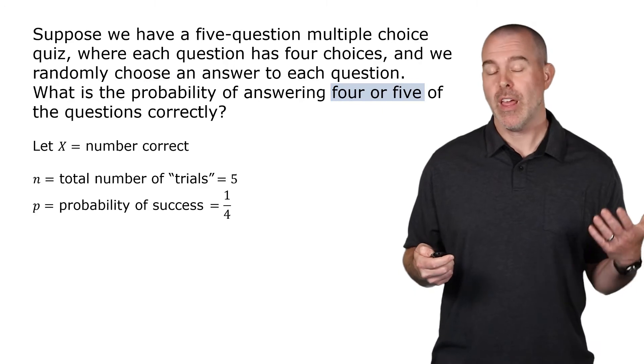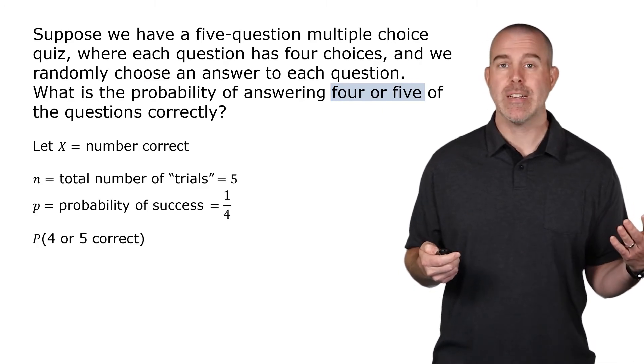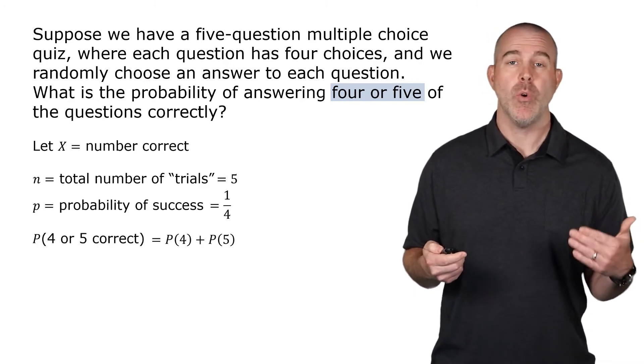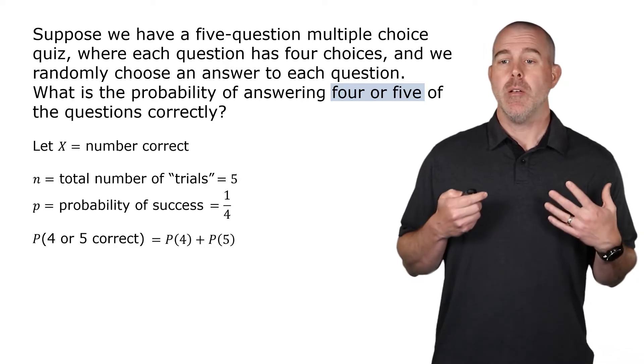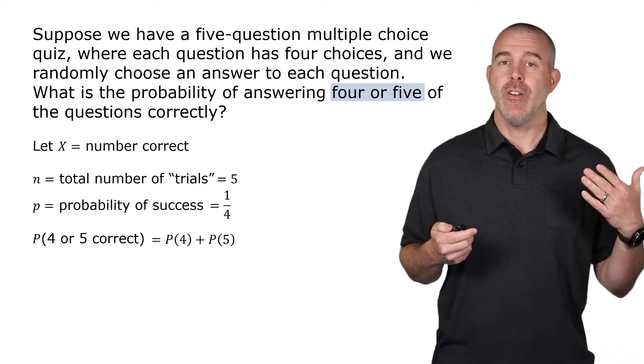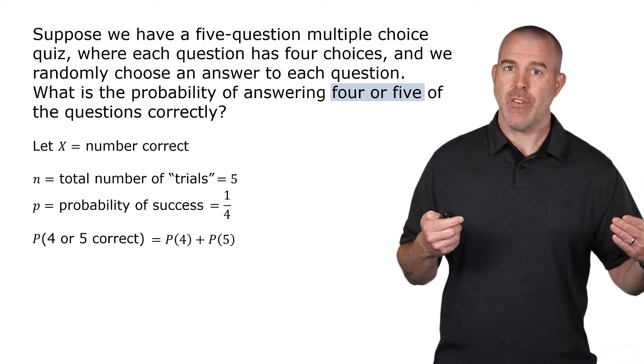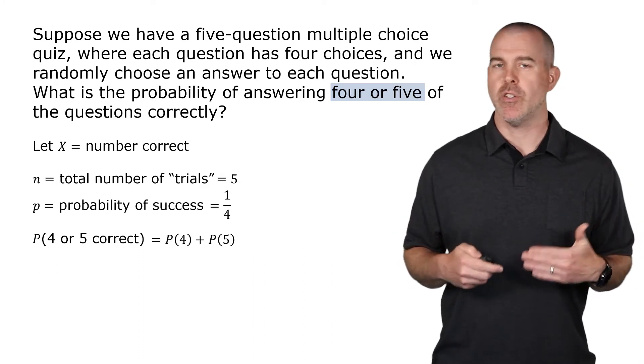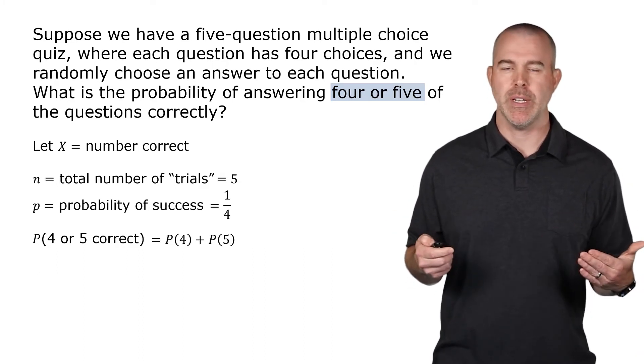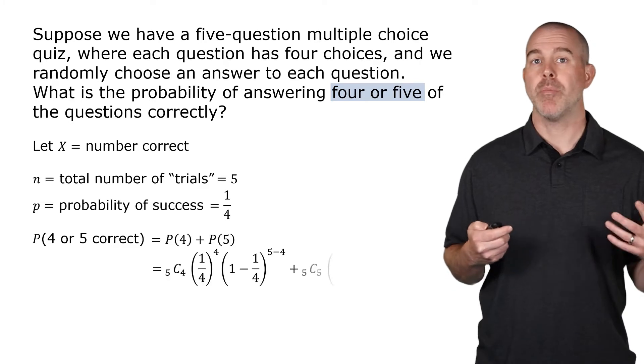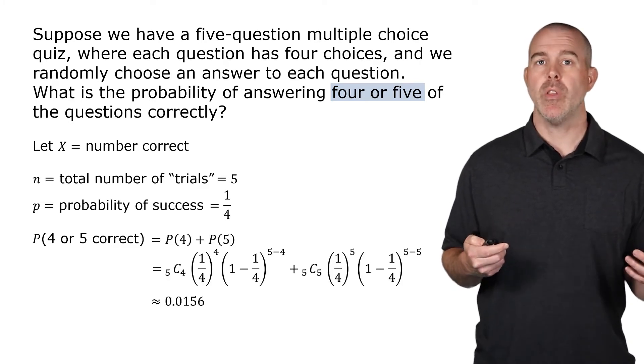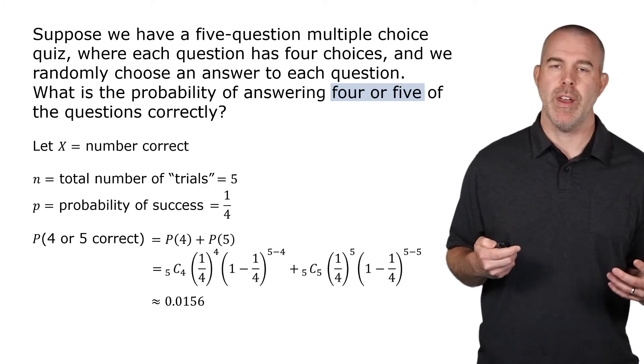The probability, then, of getting four or five correct would be the probability that X is four or five. This is the addition rule, but you can't get four right and five right, so there's no overlap. It's just the probability of four plus the probability of five. We can use the binomial probability formula. We compute those. We get about 0.0156.